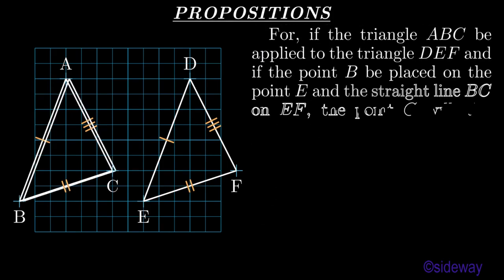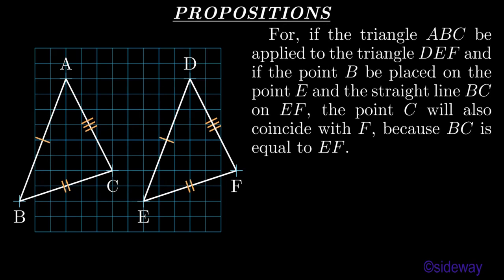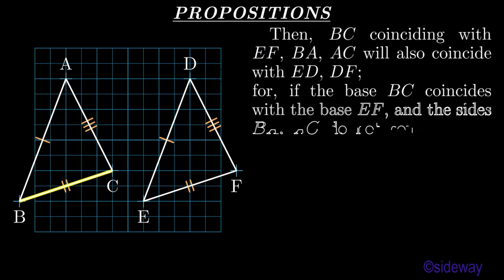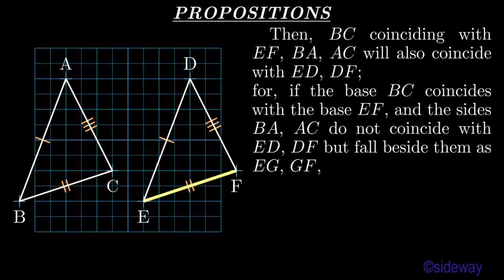For if the triangle ABC be applied to the triangle DEF, and if the point B be placed on the point E and the straight line BC on EF, the point C will also coincide with F, because BC is equal to EF. Then, BC coinciding with EF, BA and AC will also coincide with ED and DF.